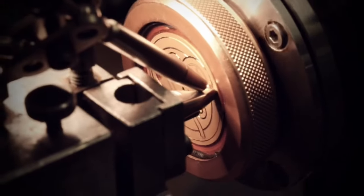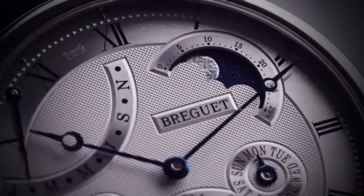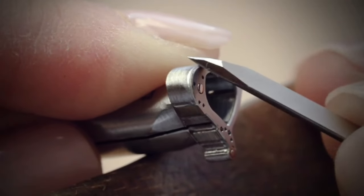Breguet Classic Quantumy Perpetual 7327. Main specifications: self-winding movement, power reserve approximately 45 hours, Caliber 502.3P, 35 jewels, frequency 3 Hz balance wheel.